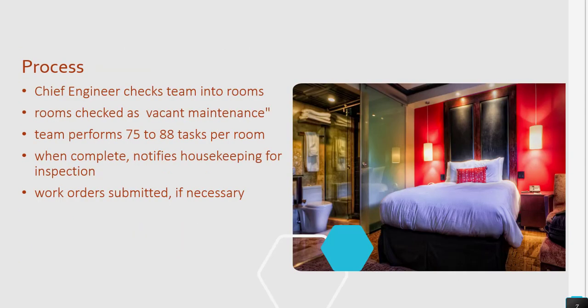We will see the process of how the engineering team is supposed to do the guest room preventive maintenance. The chief engineer checks the team into the rooms — rooms checked as vacant maintenance. The team performs 75 to 88, or in some cases 90, 100, or 120 tasks per room. When complete, notify housekeeping for inspections. A work order is submitted if necessary. The chief engineer and engineers are supposed to coordinate with the housekeeping team. The housekeeping and the engineer should work together like two sides of a coin to achieve preventive maintenance in the guest room.